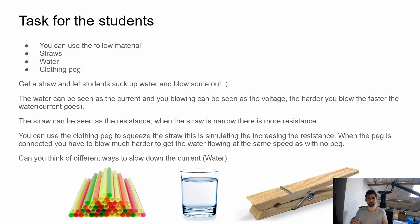So I want you guys to grab a straw and a clothing peg and a glass of water. What I want you guys to do is suck up the water and blow it out. Easy. So you blowing is the voltage, and then the water going out is the current. So the harder you blow, the more water comes out. The softer you blow, the less you blow, the less water comes out. So that is a relation between voltage and current. Now take the peg and put it on top of the straw. You'll notice now when you blow, less water will come out than before because I increased the resistance.